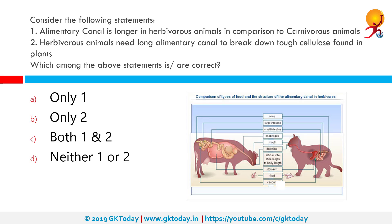The alimentary canal is longer in herbivorous animals in comparison to carnivorous animals. Herbivorous animals need a long alimentary canal to break down the cellulose found in plants. The correct answer is both statements are correct. Both herbivores and omnivores have longer alimentary canals than carnivores. Herbivores have a large cecum which helps in digestion of plant materials such as cellulose. Carnivores have shorter digestive tracts as they can absorb nutrients more quickly from meat.